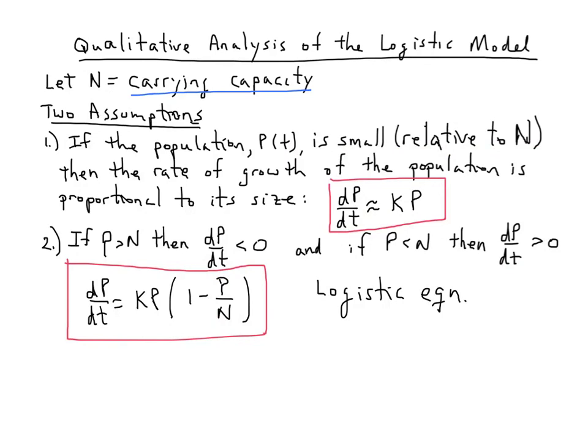The first thing to observe is that there are two constant solutions. The function P(t) = 0 satisfies this equation. If I have no population, or zero species in my population, it is satisfied. Its derivative, of course, is 0. And if I plug 0 in for my function, I get 0 on my right-hand side as well.